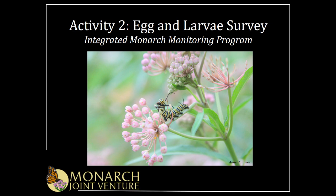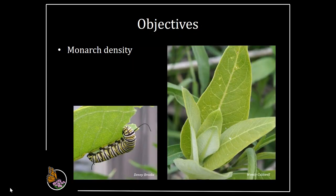In this online training video, we'll learn to conduct Activity 2, the Monarch Egg and Larvae Survey. This activity is a survey for monarch eggs and larvae, otherwise known as caterpillars. You will examine milkweed plants in the monitoring plot and count how many monarch eggs and larvae are present. This activity helps us understand monarch density, which is a measurement of the number of monarchs and larvae on a certain number of milkweeds. Researchers will use the data to look at differences among habitats and geographies. We can also better understand the timing of monarch reproduction within a year, between years, and among different sites. By observing the same area repeatedly, we can also learn about the survival of eggs and larvae — all by counting eggs and larvae on each milkweed plant observed.